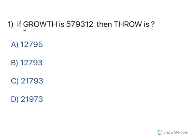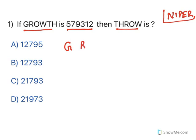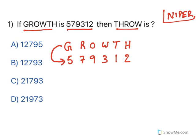Now, understand this. If GROWTH is 579312, then THROW is what? All these questions are given in NIPER examination. In such kind of questions, you need to write G-R-O-W-T-H and note that it is given as 579312. That means these corresponding alphabets correspond to these numerical values. So G is equivalent to 5, R is equivalent to 7, and so on.